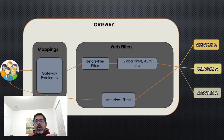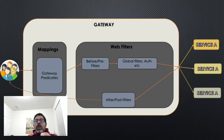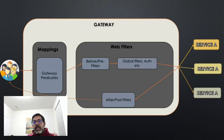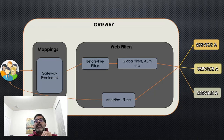A client sends a request to the gateway URL to access a service. The call is matched against a mapping — just a plain URI, not headers or cookies. If the mapping is matched, the call is passed on to the pre-request filter, which may do some processing before the request is passed on to the downstream services. There are also global filters that handle common authorization and other cross-cutting concerns, and post filters that can do some processing before sending the response back to the client.